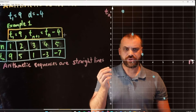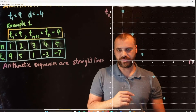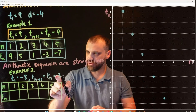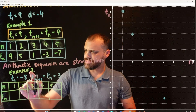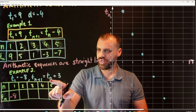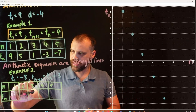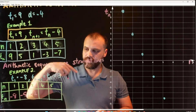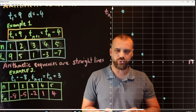I need to graph one more because I want to show you the difference between different kinds of arithmetic sequences. Here's my second example. I've got this recurrence relation where term one is negative 8, and the next term equals the current term plus 3. So: negative 8, plus 3 gives negative 5, plus 3 gives negative 2, plus 3 gives 1, plus 3 gives 4.